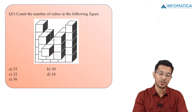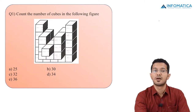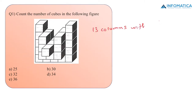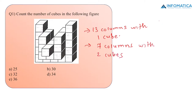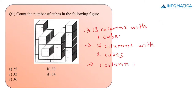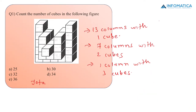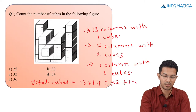In the first MCQ, a cubical structure is given and we need to count the number of cubes. So let's start counting. If I look carefully, there are 13 columns containing 1 cube each, then there are 7 columns containing 2 cubes, and there is 1 column containing 3 cubes. So to get the total, I will calculate 13 multiplied by 1, plus 7 multiplied by 2, plus 1 multiplied by 3.